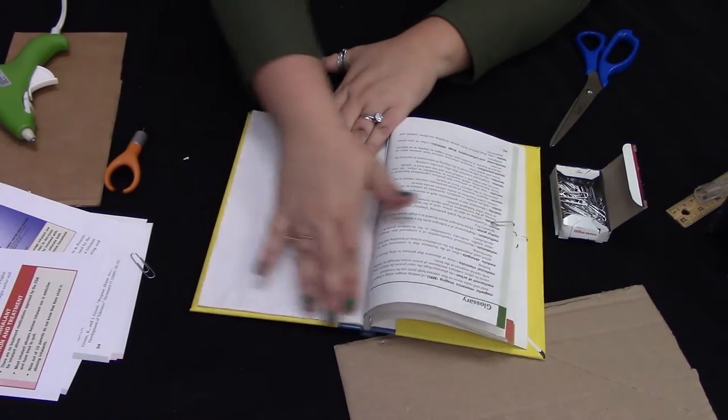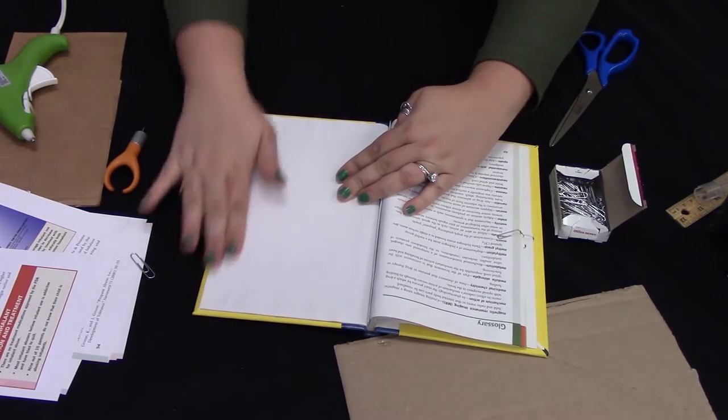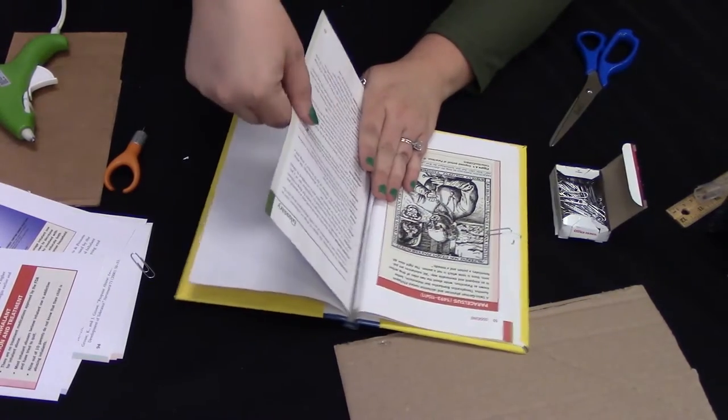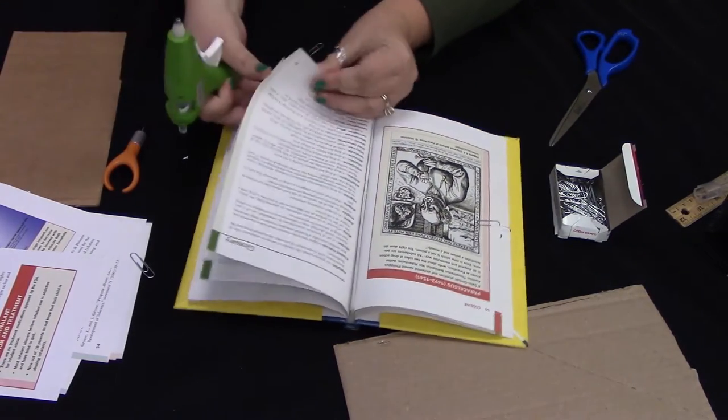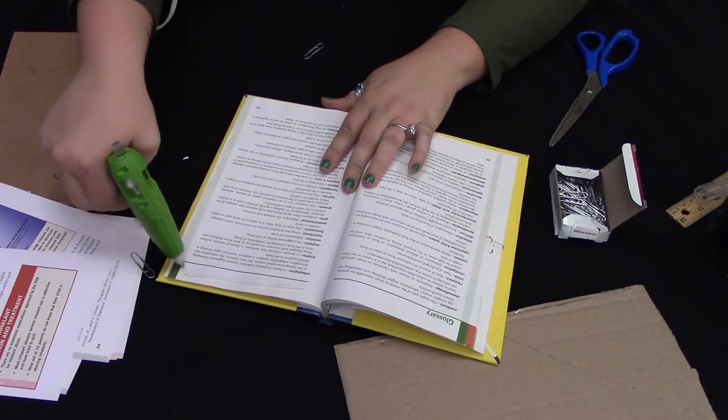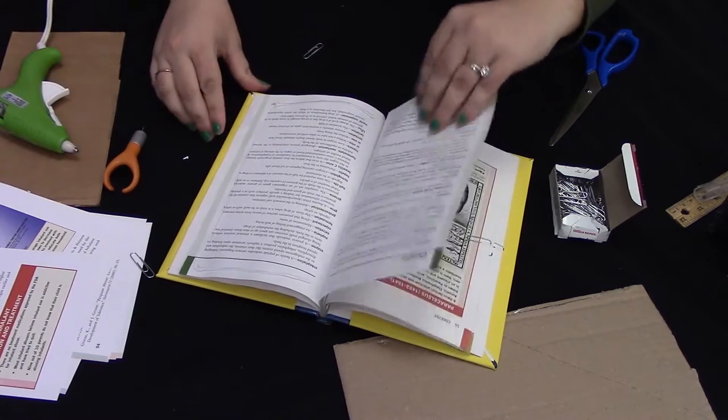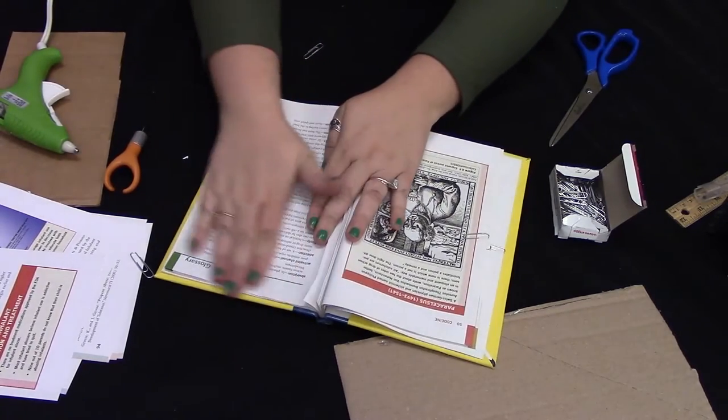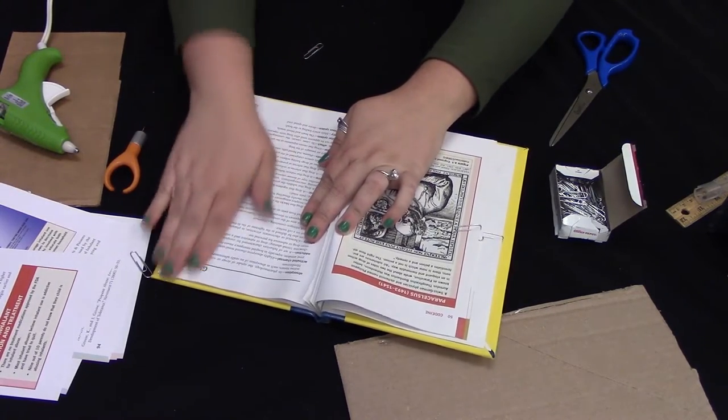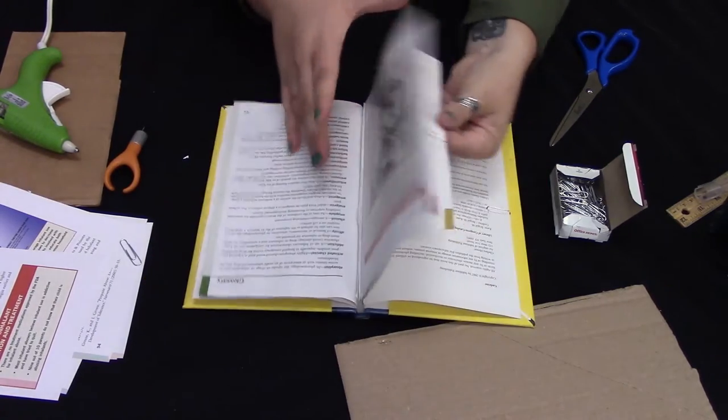Be careful—remember hot glue is hot. And we'll do that for each section of our book, being careful to only glue the ones that are paper clipped together and not everything to each other, so that we have thicker dividers in between for our book.